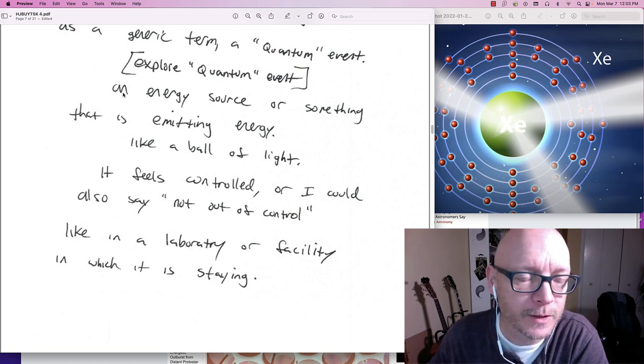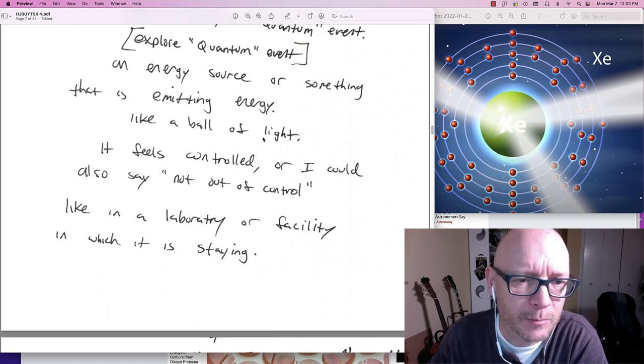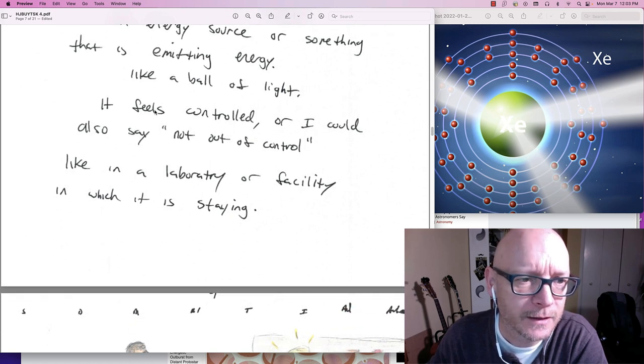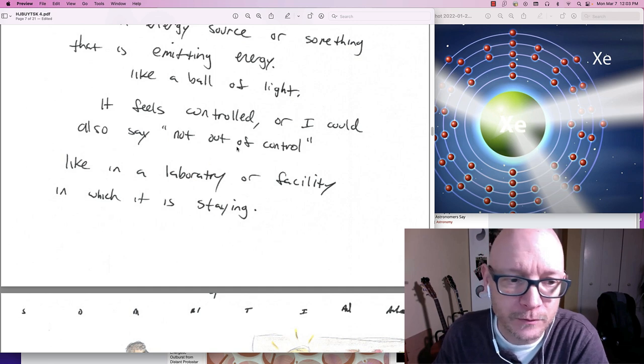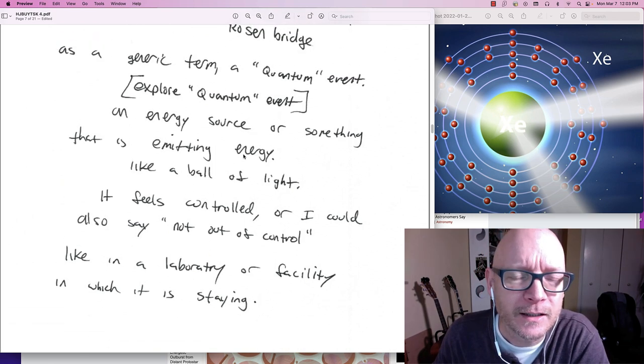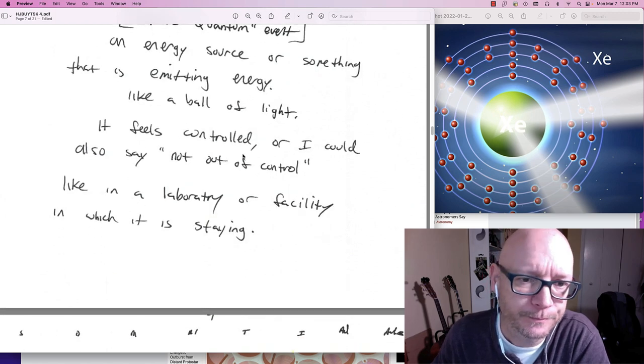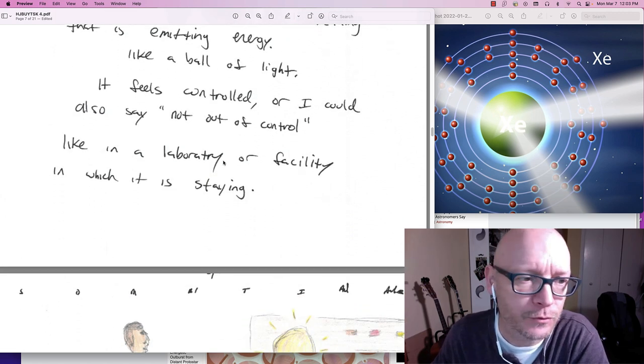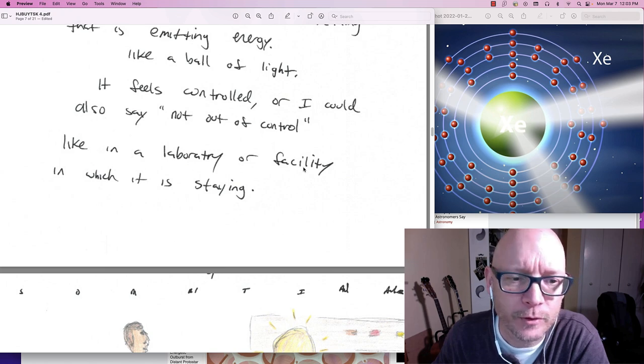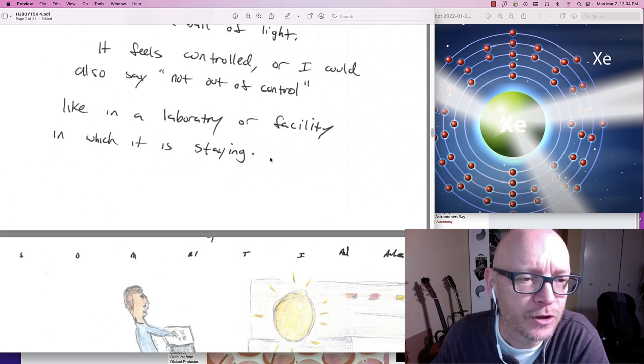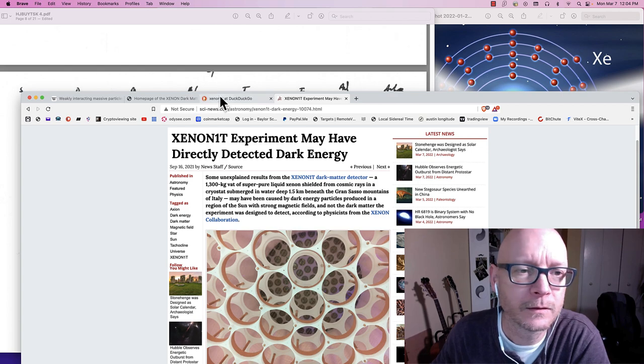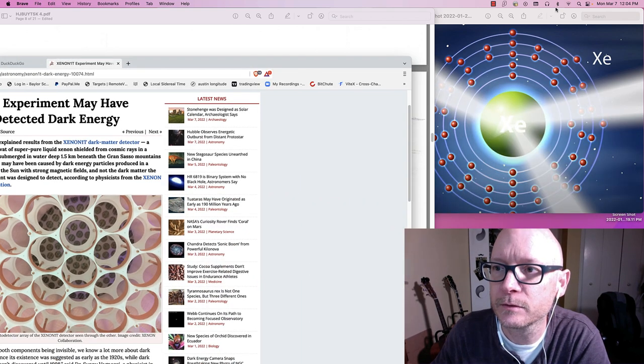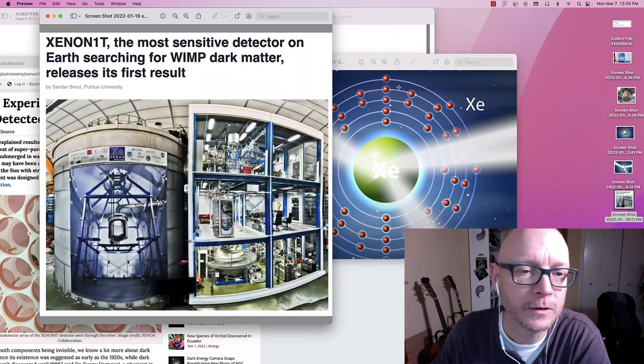An energy source. Or something that is emanating energy. Like a ball of light. It feels controlled. Or I could also say not out of control. Meaning that it didn't feel like a nuclear explosion. It was something more not out of control. Like in a laboratory or facility. In which it is staying. The facility here. Again. Where do I have my images here? The facility.